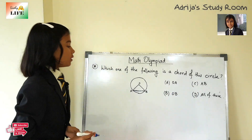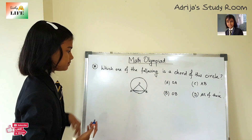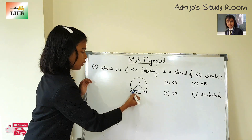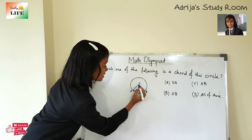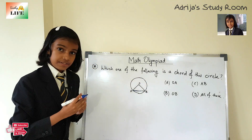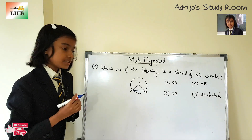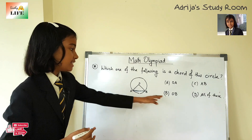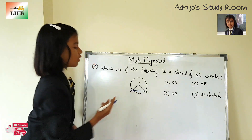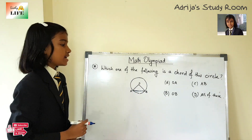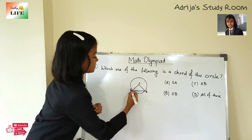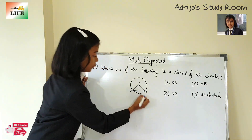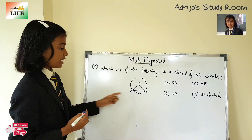The options are OA, OB, AB, and all of these. First, OA — O is the center point, so OA is not a chord because O is not a point on the circumference. OA is a radius. Similarly, OB is also a radius since O is the center point. Then AB — yes, AB is a chord because both A and B are points on the circumference.